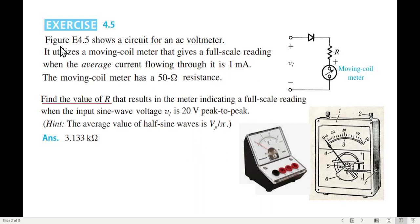Let's see the question. The figure E4.5, this figure, shows a circuit of AC voltmeter. So this is the AC voltmeter circuit. It utilizes a moving coil meter that gives a full scale reading when the average current flowing through it is 1 milliampere.